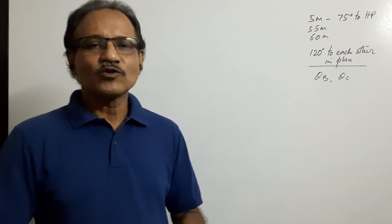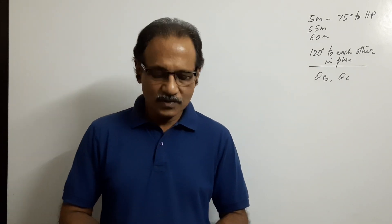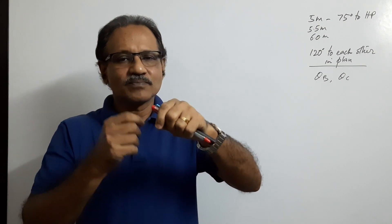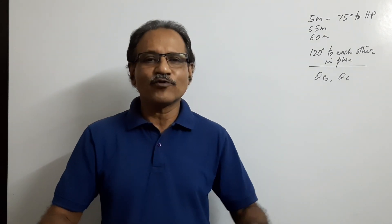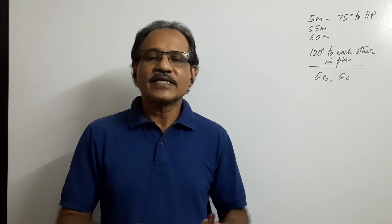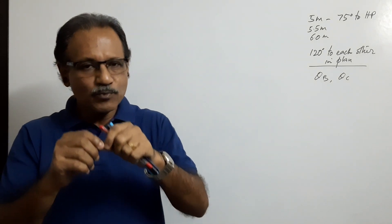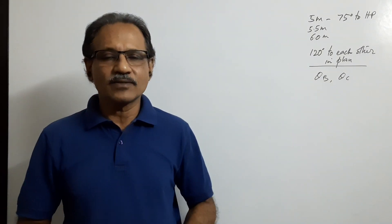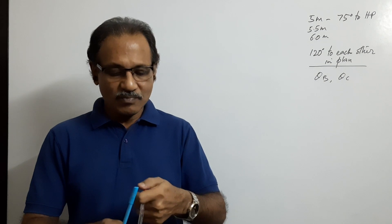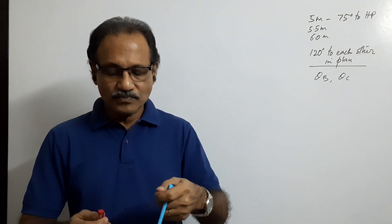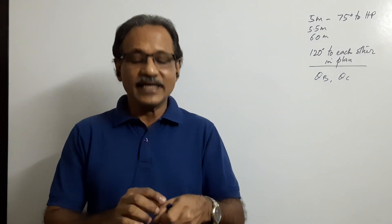Hi students, we are going to see a very interesting question today. It's all about a tripod stand. Tripod stands usually have legs of the same length — for example, camera stands or stands used in measuring equipment like a theodolite. Here, however, the tripod has legs of different lengths: one leg is 5 meters, another is 5.5 meters, and the third is 6 meters.